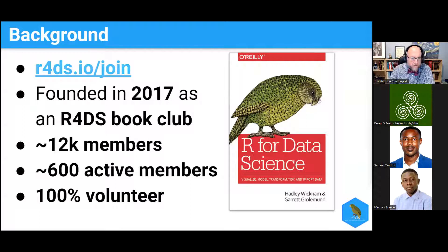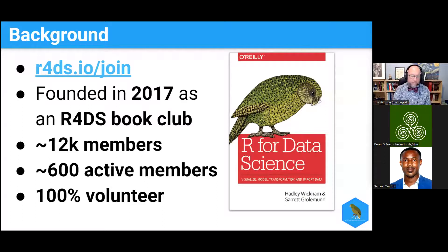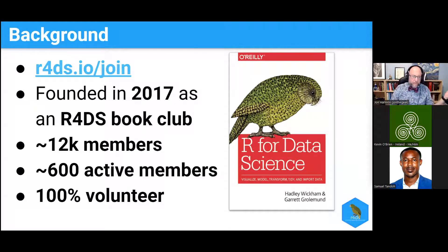A little bit of background about what I'm talking about here. I run the R4DS online learning community. You can join our Slack at r4ds.io/join — I'll bring that link up a couple of times during the talk. We were founded in 2017 as an R4DS book club. There's the famous book R for Data Science by Hadley Wickham and Garrett Grolemund. Currently we have a little over 12,000 members. About 500 or 600 are active every week — it's not always the same group, so lots of people cycle through.